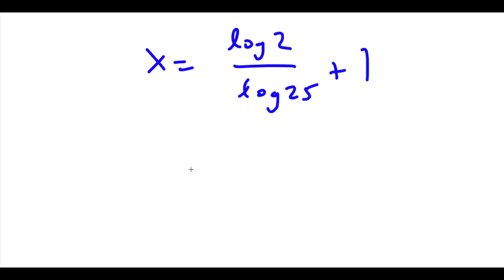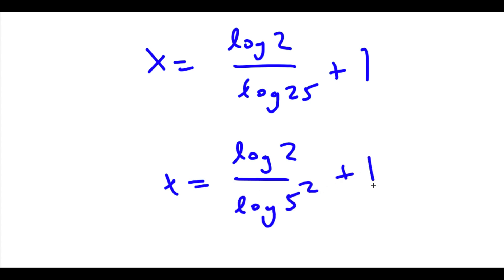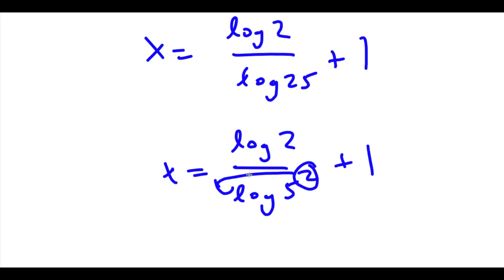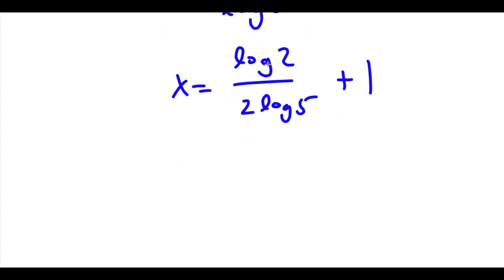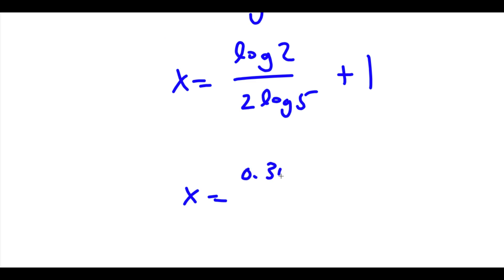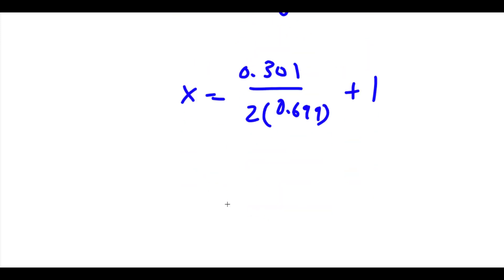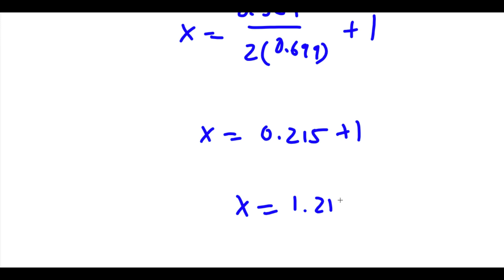Now log 25 is the same thing as log 5 squared. I can move the 2 to the front using the power rule. So now I have x is equal to log 2 over 2 times log 5, plus 1. Now log 2 is equal to 0.301 and log 5 is equal to 0.699. Dividing these gives 0.215, so our answer is x equal to 1.215.